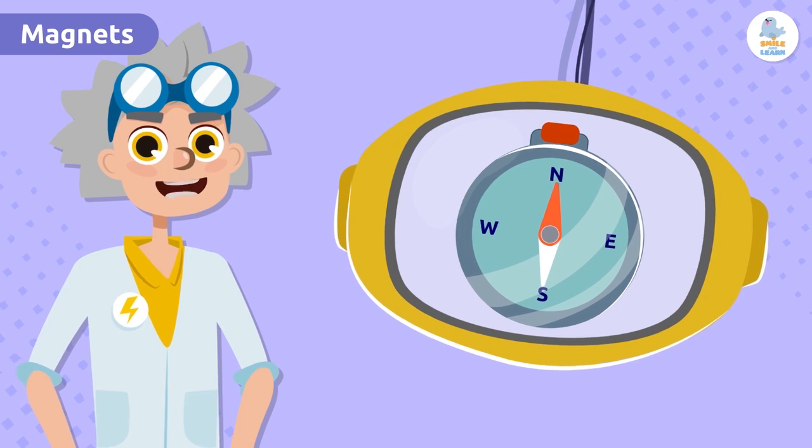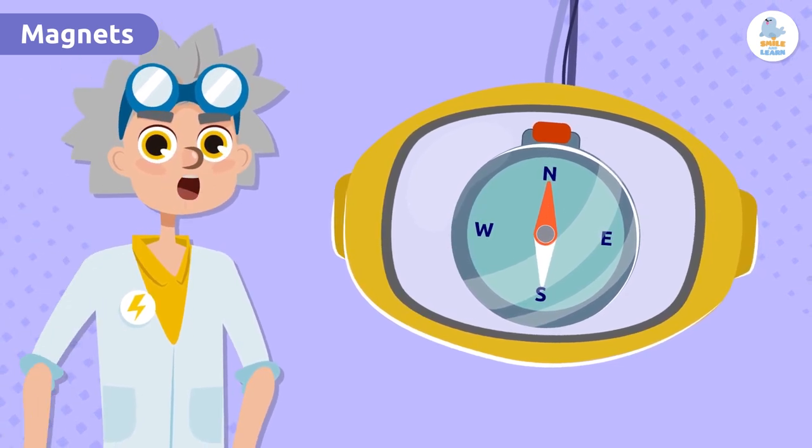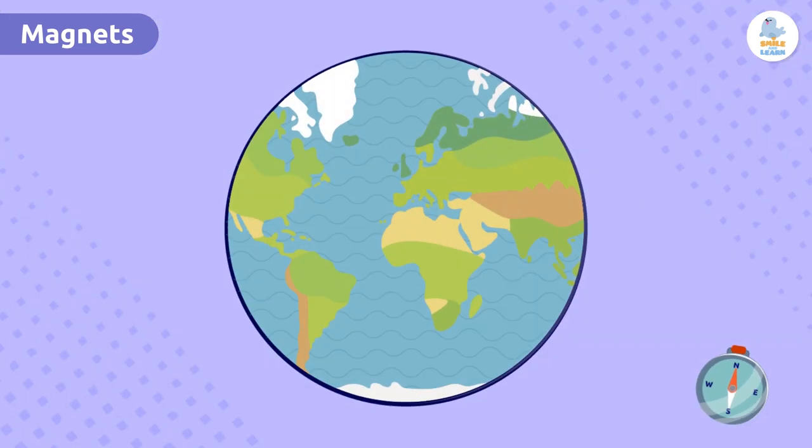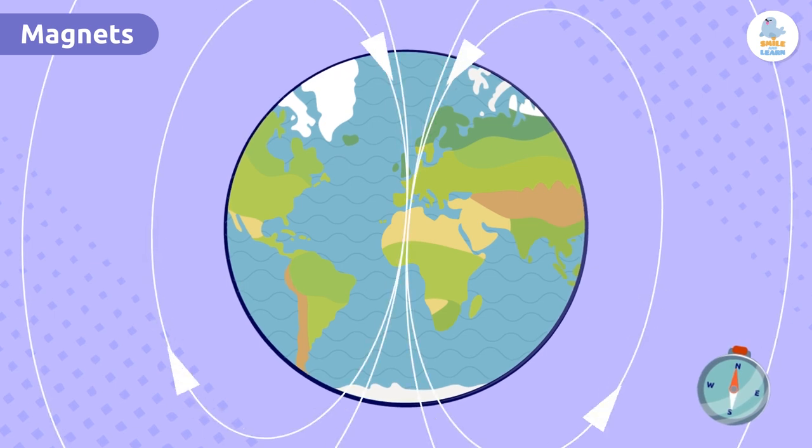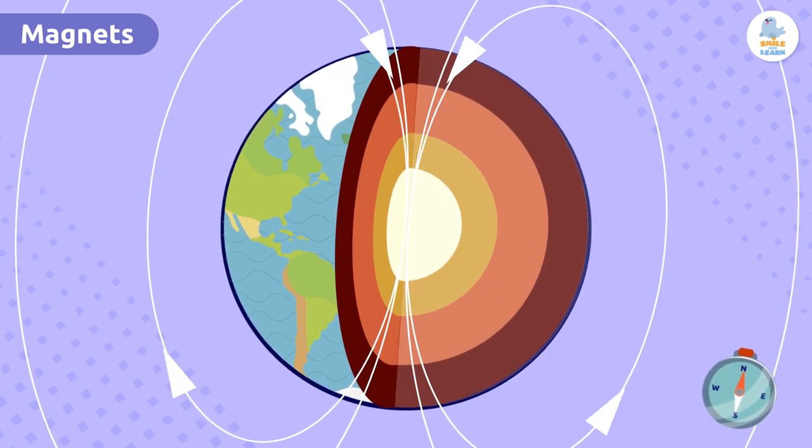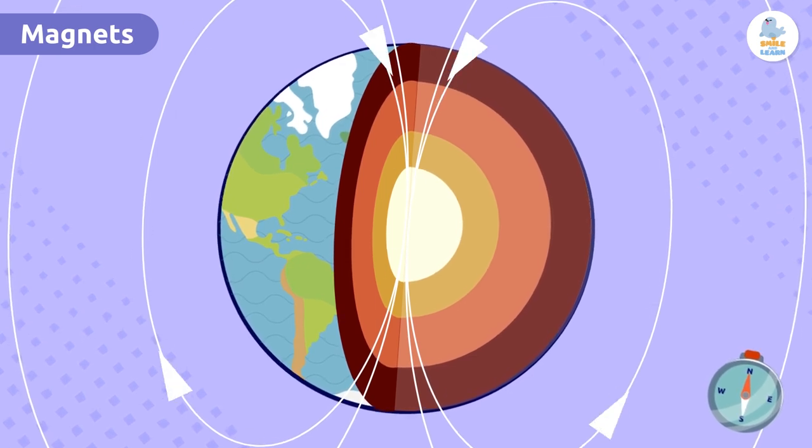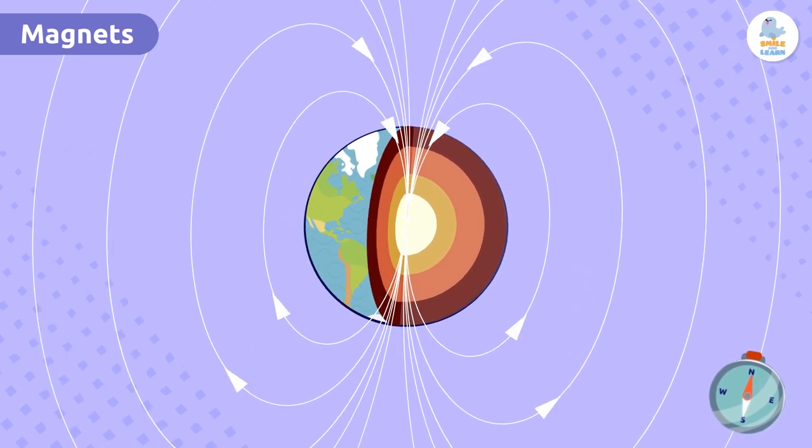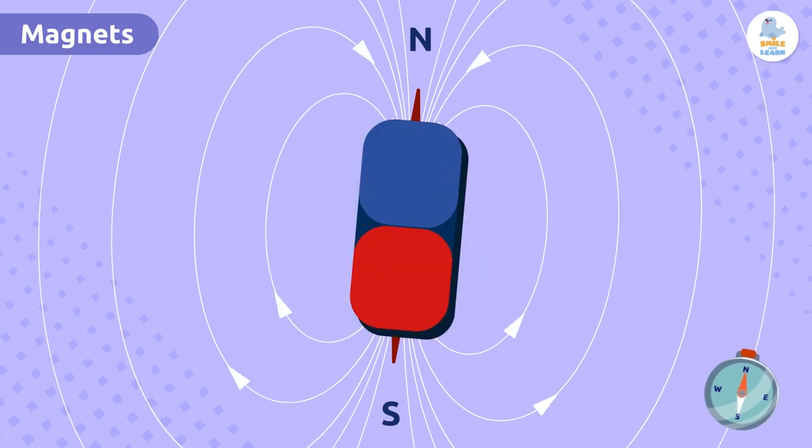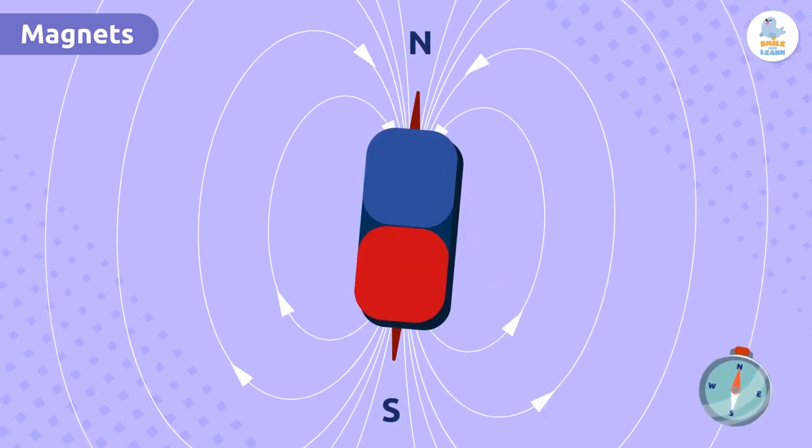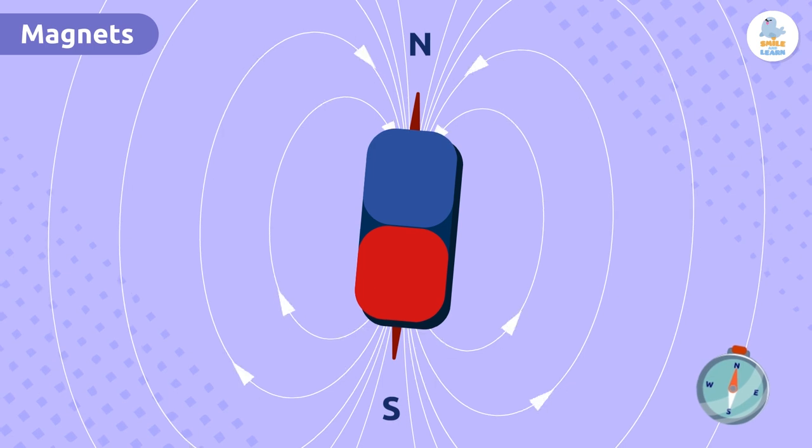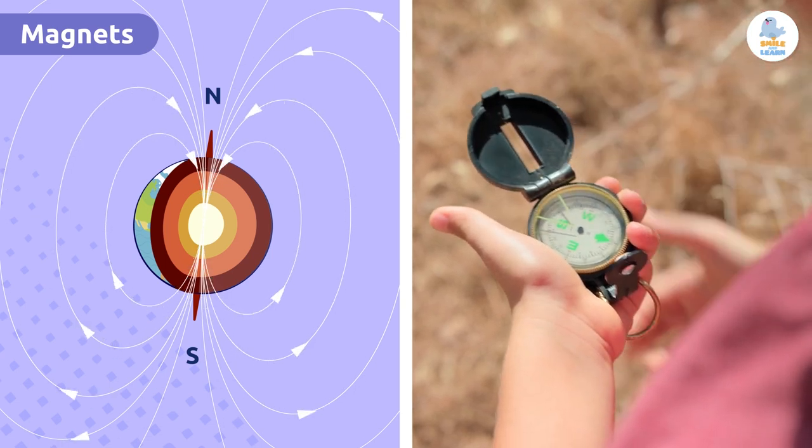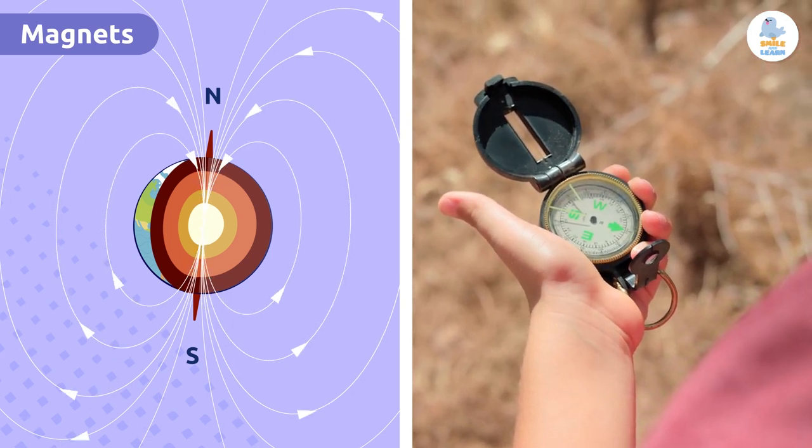Did you know that compasses work thanks to magnets? Magnetism is very important in knowing our orientation and location. This is possible because our planet has a magnetic field that starts in the Earth's core, which is made up of metals such as iron and nickel, and extends through hundreds of miles of outer space. This magnetic field has a north and a south pole, just like magnets. Because of this, we can say that the Earth acts like a giant magnet. It moves the compass needle to the north and allows us to know where we are so we can move around without getting lost. Interesting, isn't it?